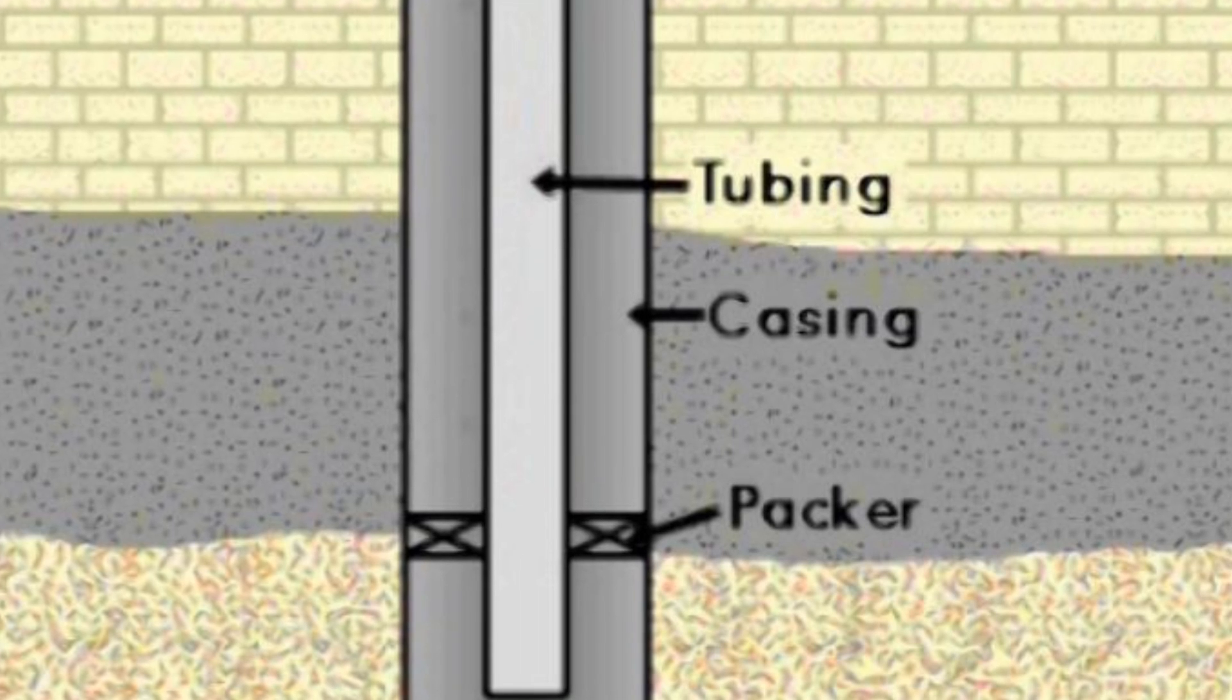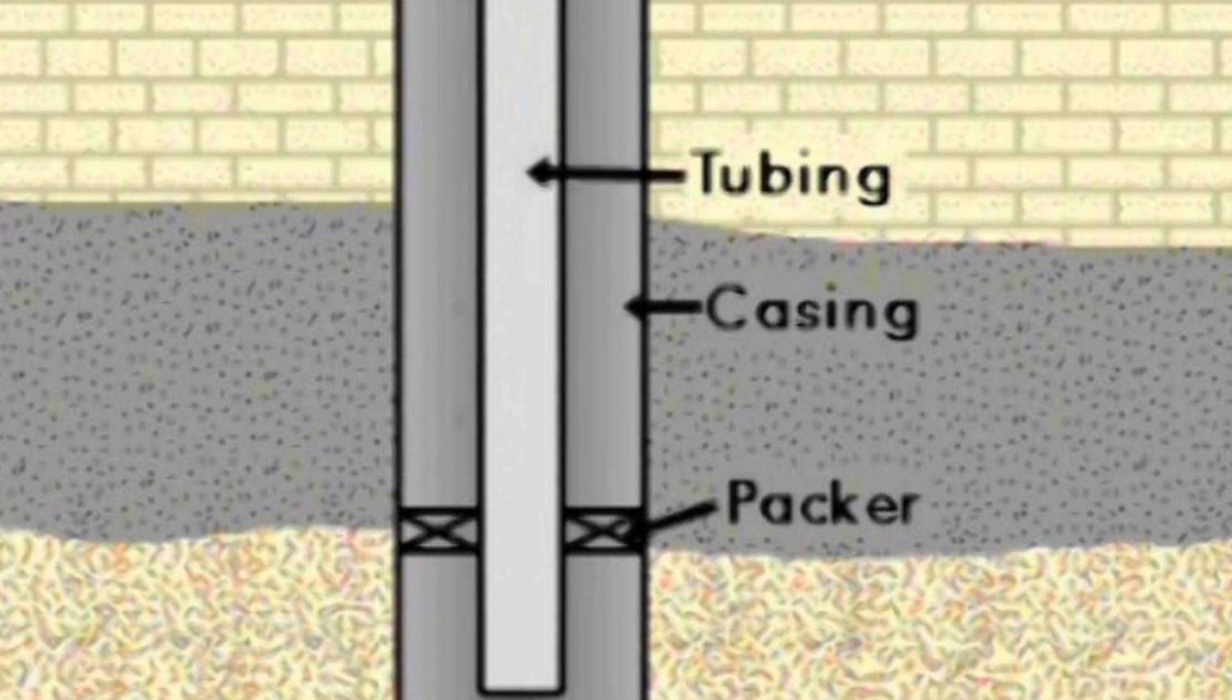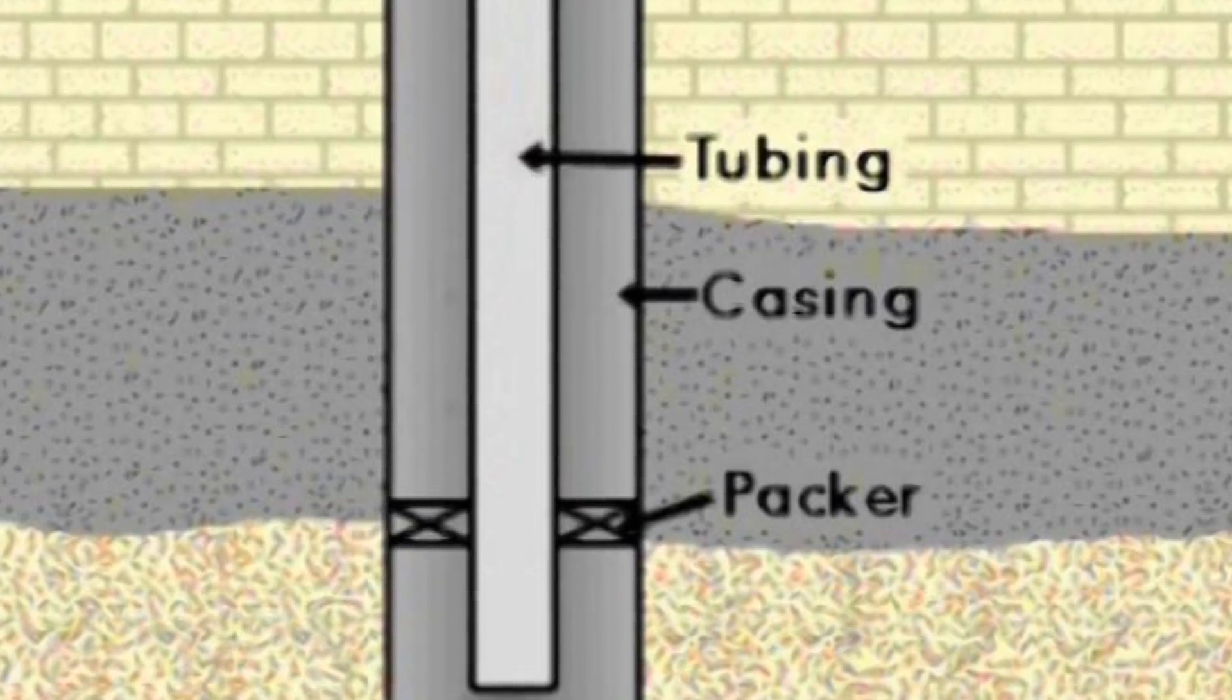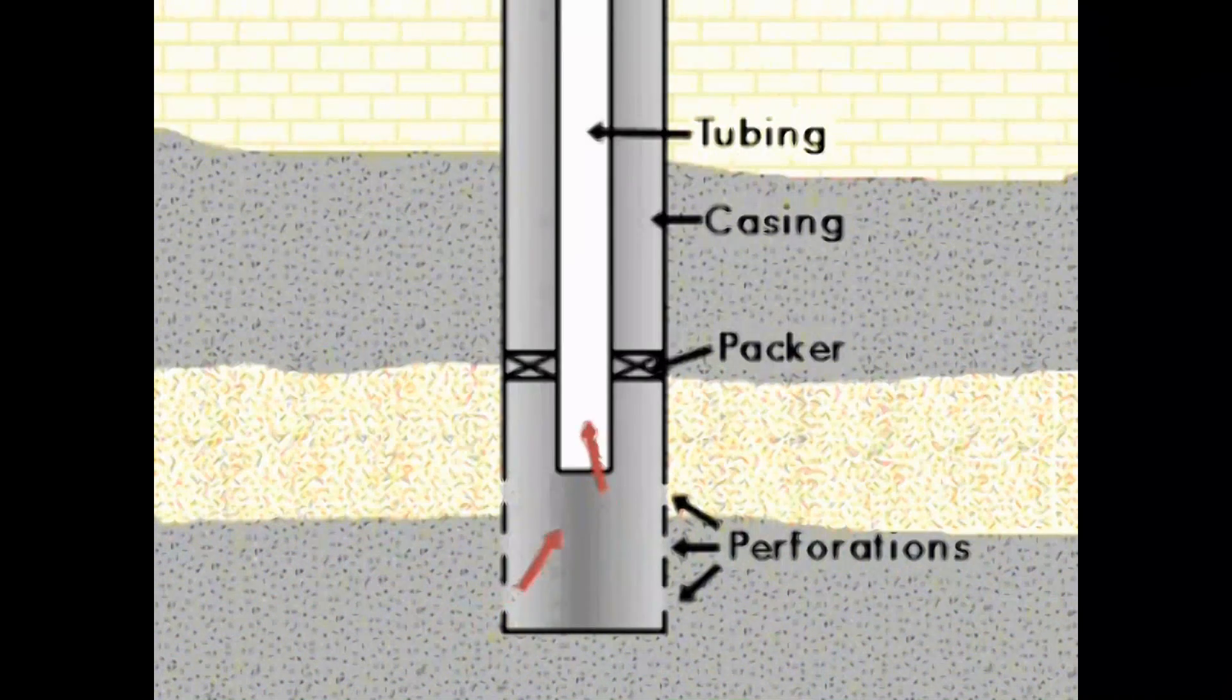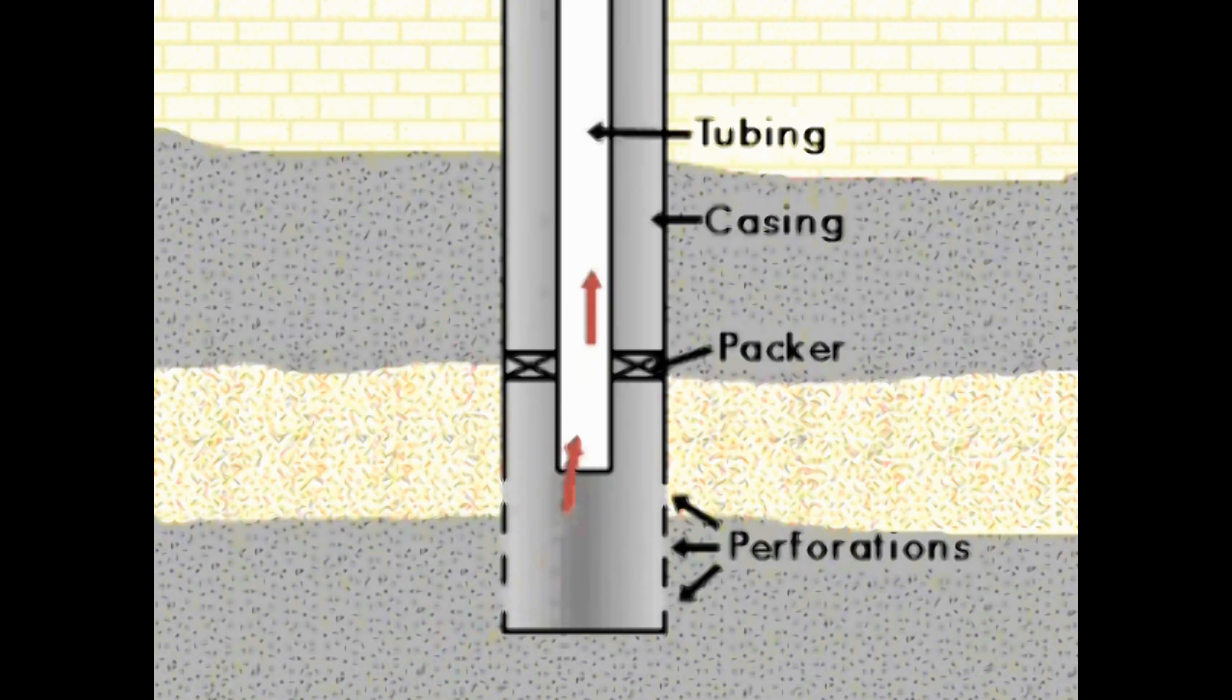In preparing the well for production, smaller diameter pipe called tubing is installed down the casing with a packer at the bottom. Let me point out here that the permanent casing is rarely used as a conduit to get oil and gas to the surface.